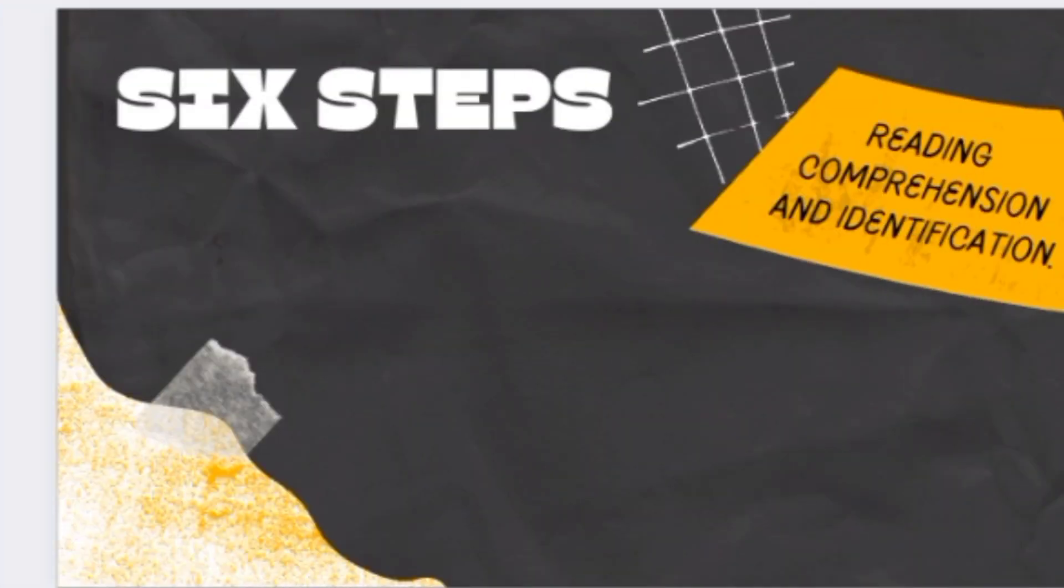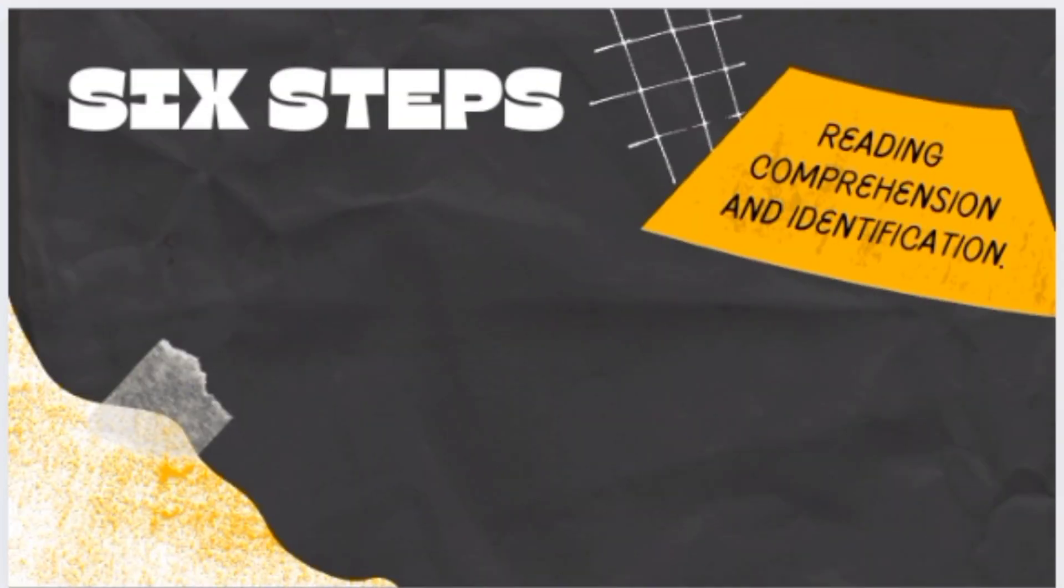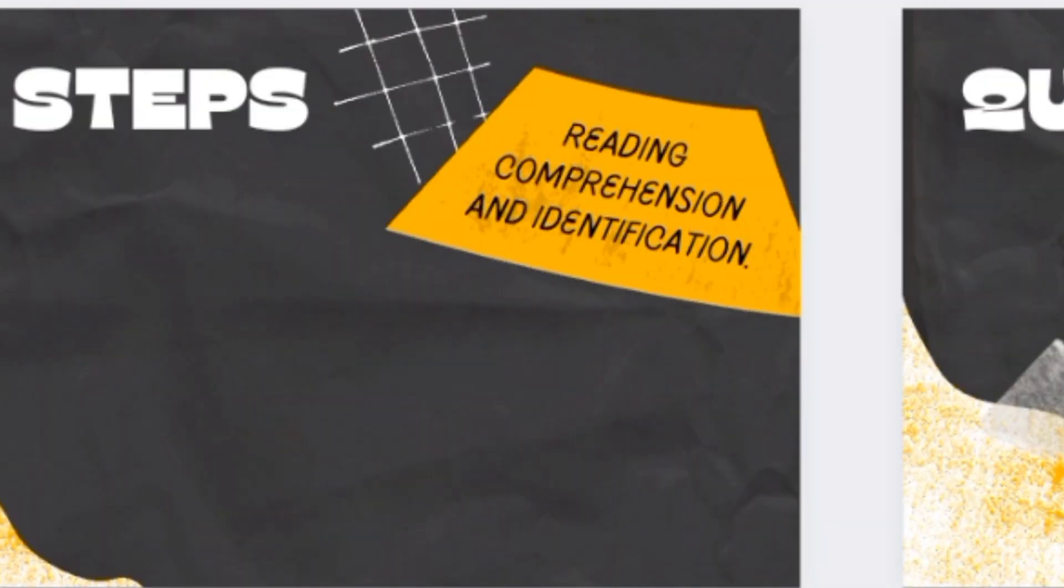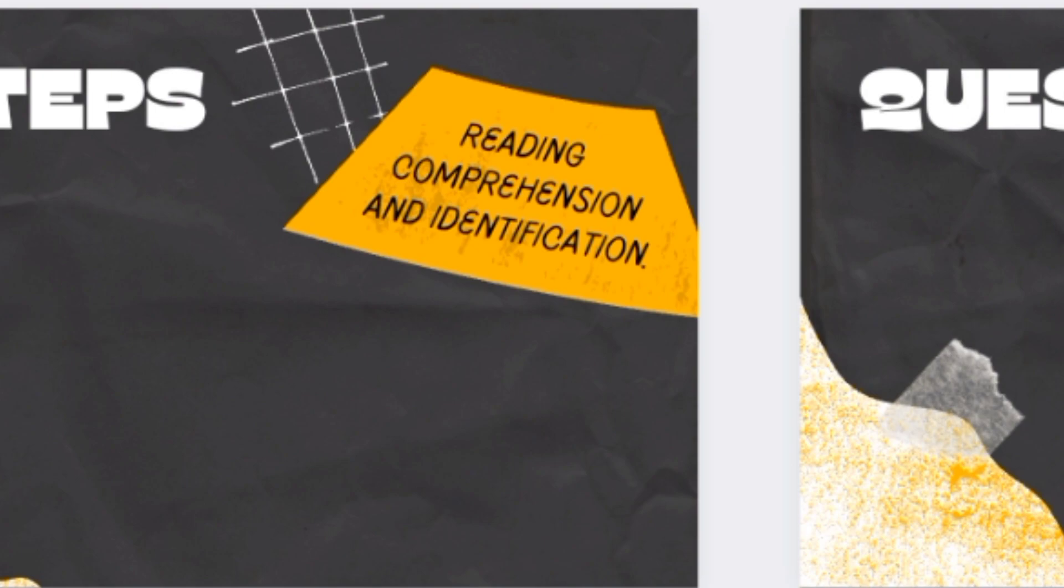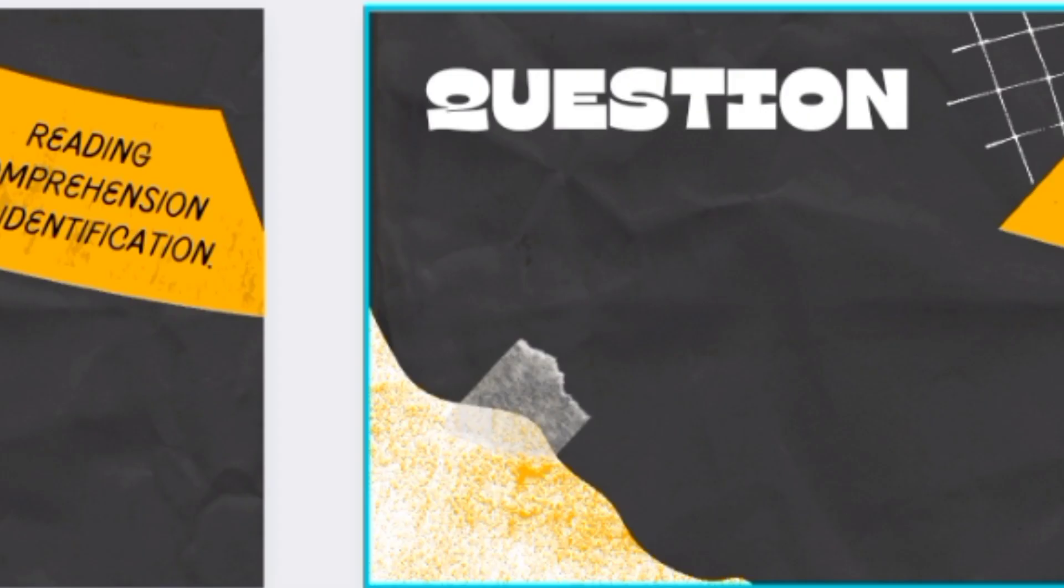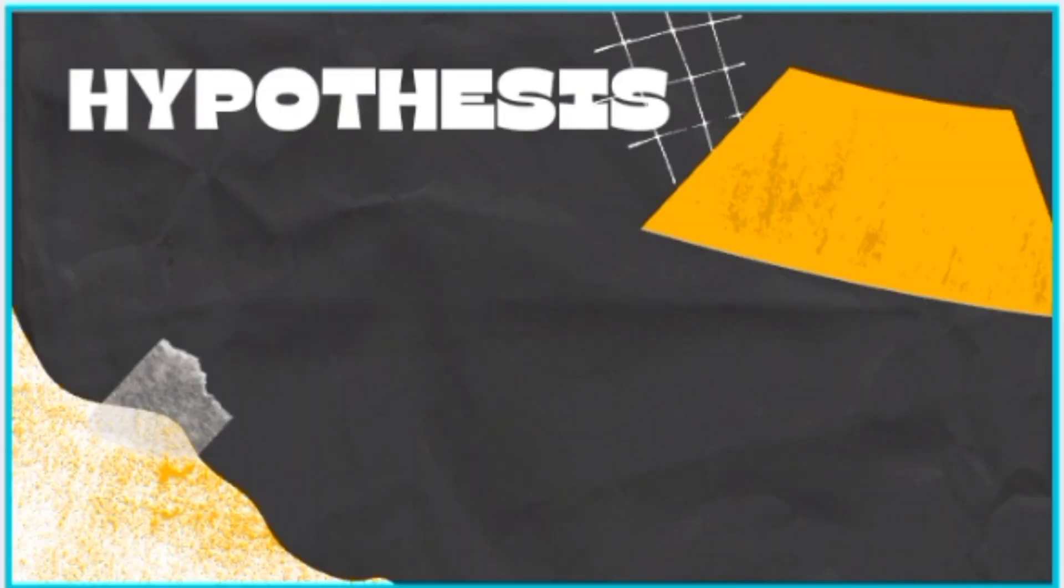There are six key steps that tends to characterize the scientific method. The first step is question. This is the best part where a scientist proposes the problem that he or she wants to solve. A well-conceived question leads to the hypothesis.